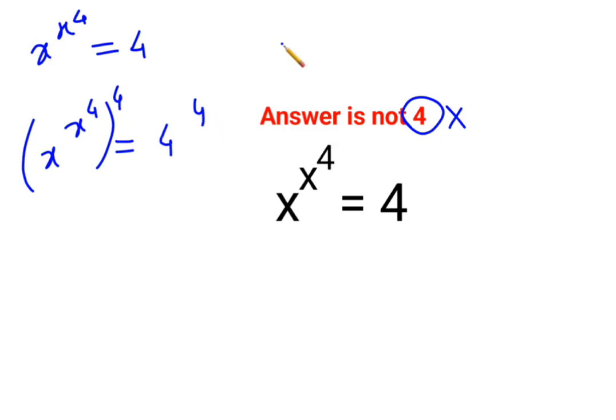Now remember, a raised to m, the whole raised to n, can also be written as a raised to n, the whole raised to m. Because eventually this is coming out to be a raised to m into n, and we all know multiplication is commutative. We can even write this as a raised to n into m.